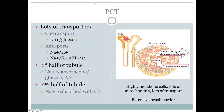The proximal convoluted tubule has really highly metabolic cells with lots of mitochondria, because it's really active — we need to generate ATP to move different substances. It's got an extensive brush border, in the same way that the small intestines have a brush border to aid in absorption. These cells are thick, active, and have finger-like extensions which add surface area for reabsorption. There are a lot of transporters in the proximal convoluted tubule, which you'd expect because this is the area of high reabsorption.